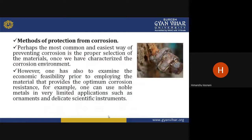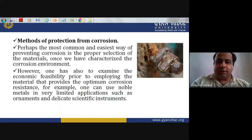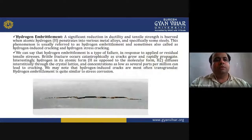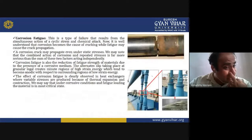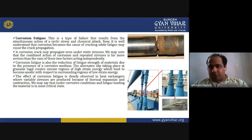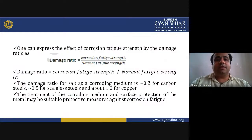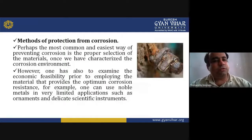We have been studying various types of corrosion — today we studied hydrogen embrittlement, its accelerating factors, and corrosion fatigue. These types of corrosion lead to depletion in material performance. Now we will discuss the various methods that help protect from corrosion.